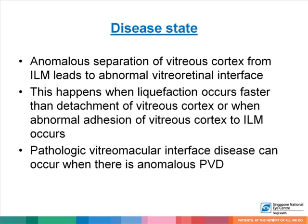In disease states, there is anomalous separation of the vitreous cortex from the internal limiting membrane, and an abnormal vitreoretinal interface occurs. This happens when liquefaction occurs faster than the detachment of the vitreous cortex, or when abnormal adhesion of the vitreous cortex to the ILM occurs. Pathology can occur when there is anomalous PVD.